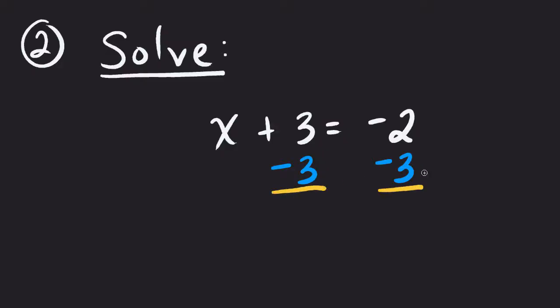Subtract from both sides means that this one here will 0 out. Positive 3 minus 3 is 0. That leaves me just the x. And now I can say negative 2, subtract 3 more. That leaves me negative 5. And I now have my solution.